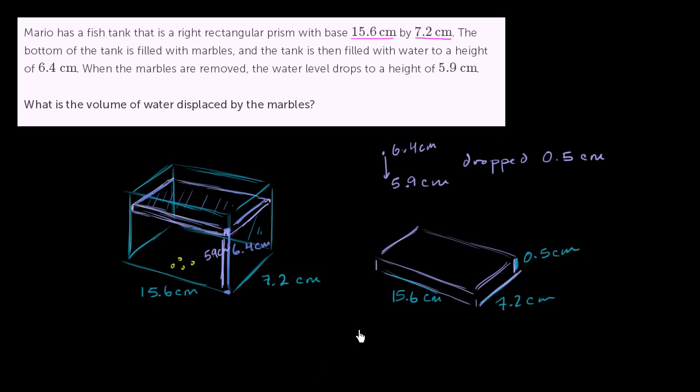So we know how to find volume. We just multiply the length times the width times the height. So the volume in centimeters cubed—and once again we're multiplying centimeters times centimeters times centimeters, so it's going to be centimeters cubed—is going to be 15.6 times 7.2 times 0.5, and it's going to be in centimeters cubed, or cubic centimeters.